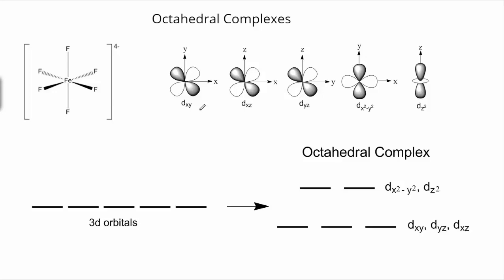If we take a look at the d orbitals, we've got dxy, dxz, and dyz. All the orbital electron density lies in between the axes - between the x and y axes for dxy, between the x and z axes for dxz, and between the y and z axes for dyz. The key is all three of these have electron density in between the axes, which is where the ligands are not coming in. The ligands are coming in on the axes for octahedral complexes.